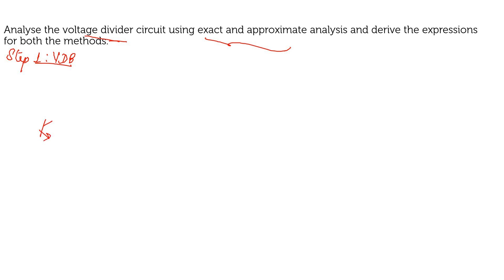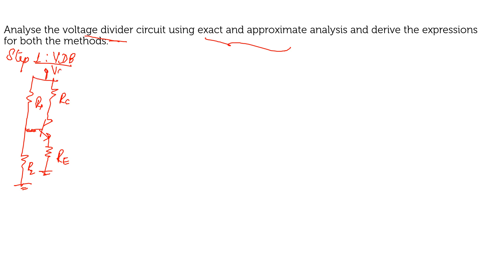In the simple circuit diagram of voltage divider bias, you will have resistor RE. Across the collector you have resistor RC. Across the input you have resistors R1 as well as R2. You will have VCC. Output is taken across the collector, so you will have coupling capacitor C2, and input is taken across the base with coupling capacitor C1 with VI. This is the circuit diagram of voltage divider biasing.